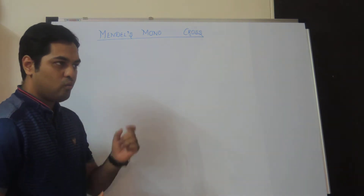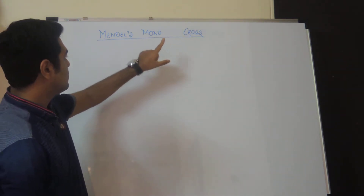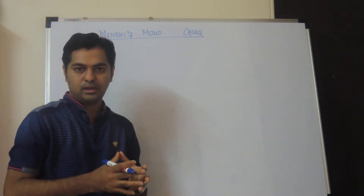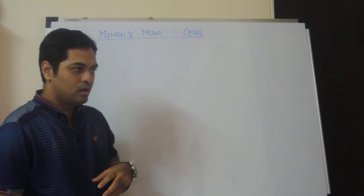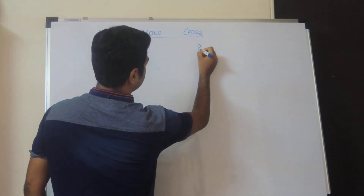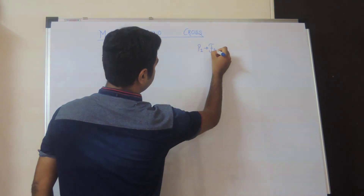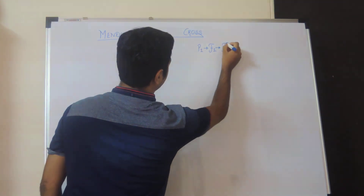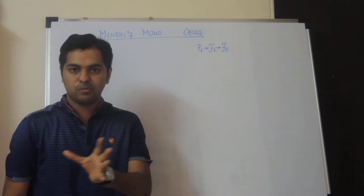We are aware that Mendel performed experiments on Pisum sativum, that is the garden pea plant. The first experiment was performed with only one pair of contrasting traits. Since it involved a single contrasting trait, it is known as mono, and two plants were cross-pollinated, which is why the word cross is used. Mendel performed experiments for three generations: P1 (parental generation), F1 (first filial), and F2 (second filial generation).